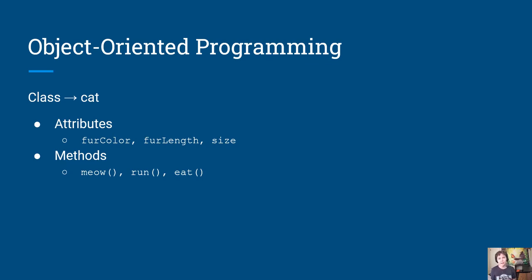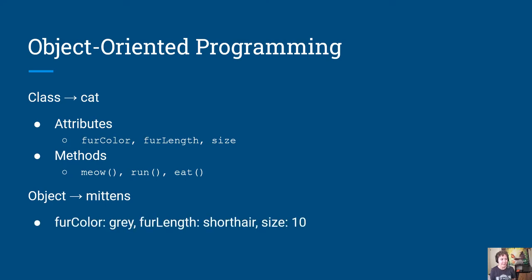Once we have our class written — our blueprint for a type of object — we could make an instance of a cat. We could name it Mittens and then specify its attributes. We could say that Mittens has gray fur, its fur length is short hair, and its size is 10 inches tall.